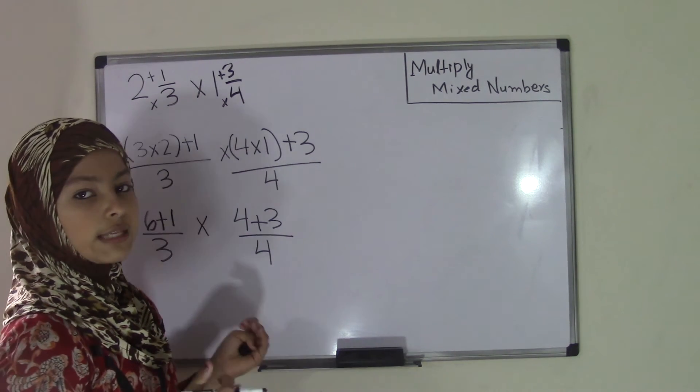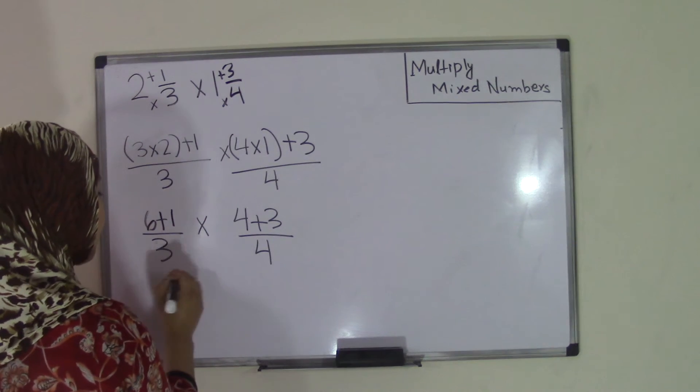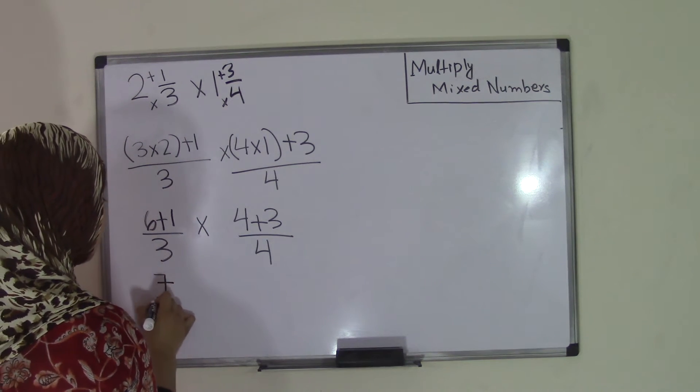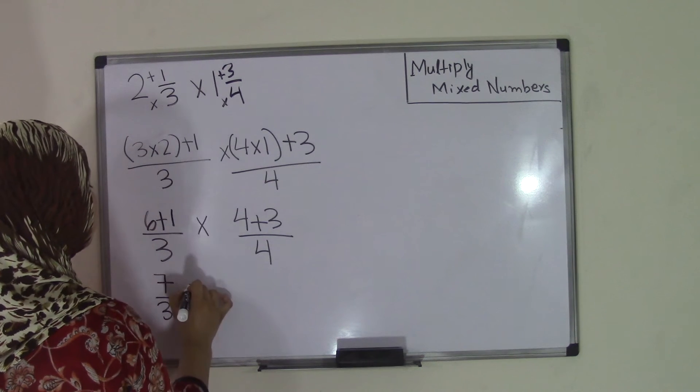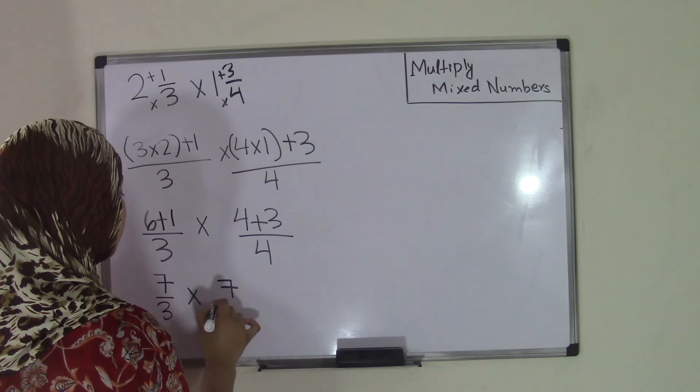So now all we have to do is add the numerators. So for 6 plus 1, we know it's 7. So 7 over 3. Bring down the multiplication sign, and then we have 4 plus 3 is 7. So 7 over 4.